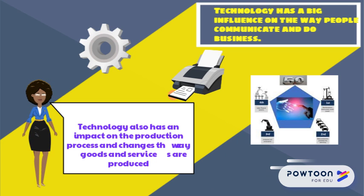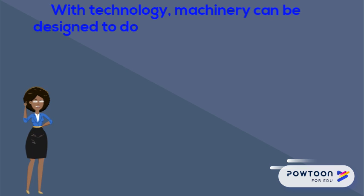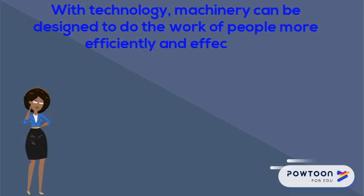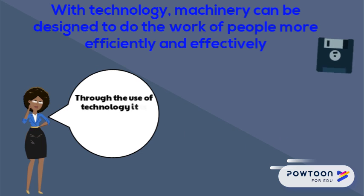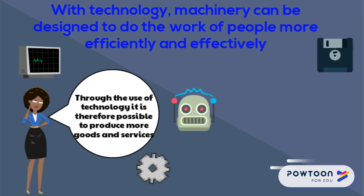Many forms of technology can be used in the production process. With technology, machinery can be designed to do the work of people more efficiently and effectively. Through the use of technology, it is therefore possible to produce more goods and services. Technology improves the production of the other factors of productivity.